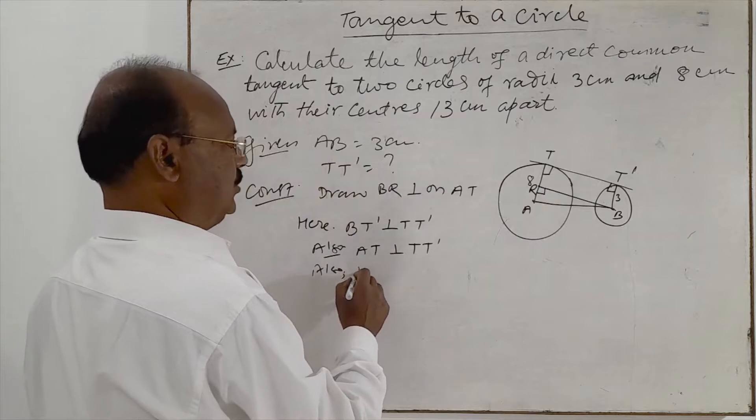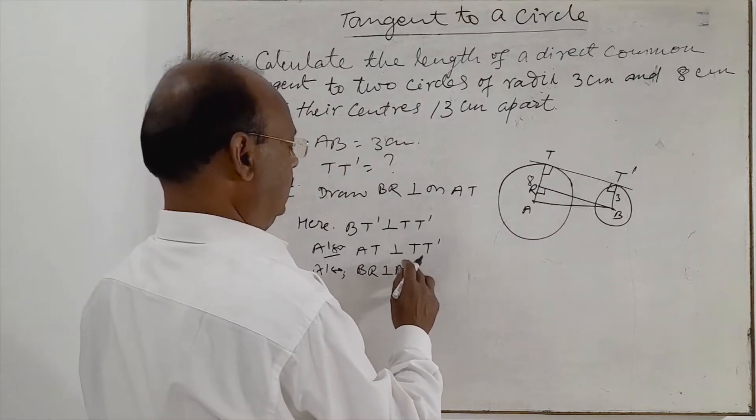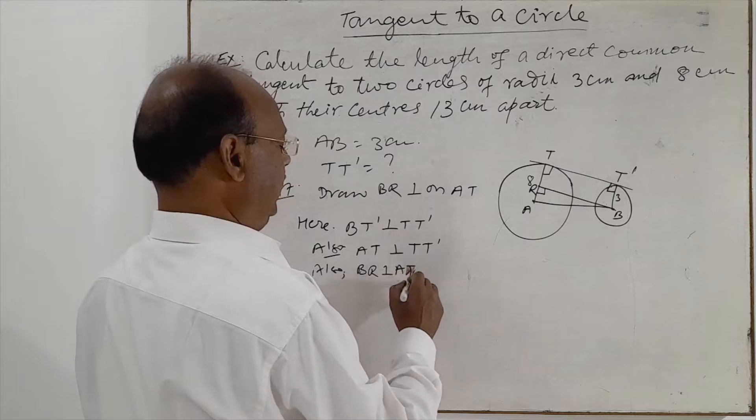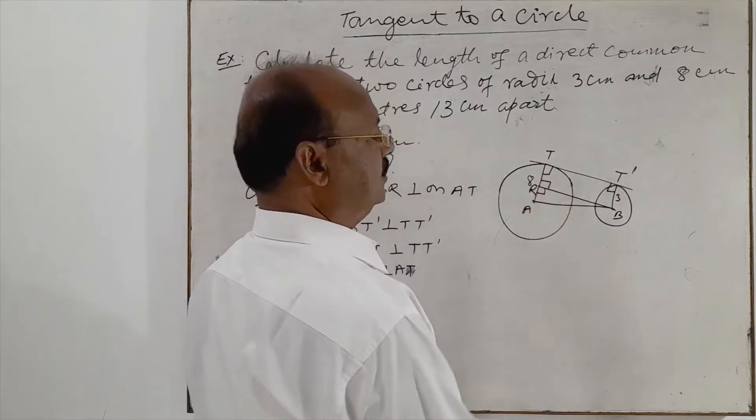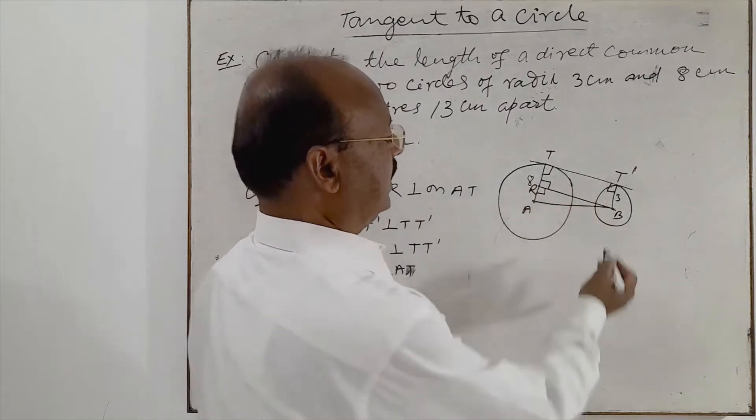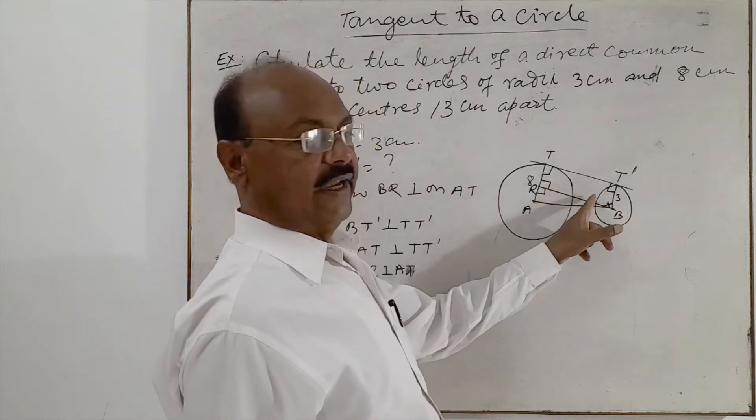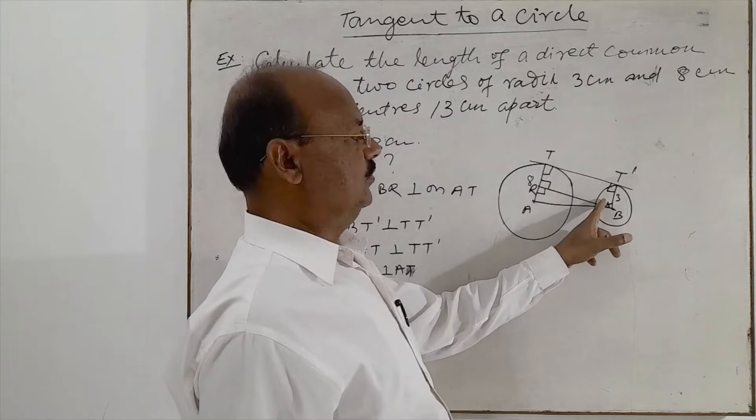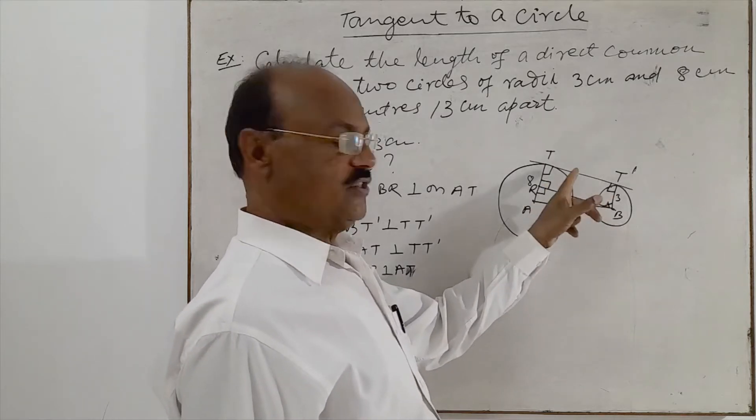Also by construction BR is perpendicular to AR, correct? So this angle is also 90 degrees. So in this quadrilateral, this angle will be how much? 90 degrees because each of these three angles is 90 degrees. So naturally this fourth angle will be 90 degrees so that sum of four angles will be 360 degrees.